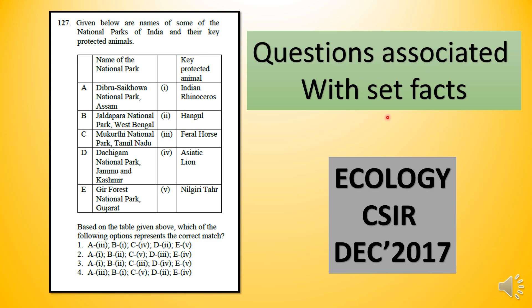If you can be confused, I will tell you — first we will target C, B, A, and proceed accordingly. Gir Forest — I believe, how much GK everyone knows, it is relevant. If you see, the 4th option and 2nd option are candidates. And Jammu and Kashmir's Dachigam National Park — if you can see, Hangul is the key protected animal there.